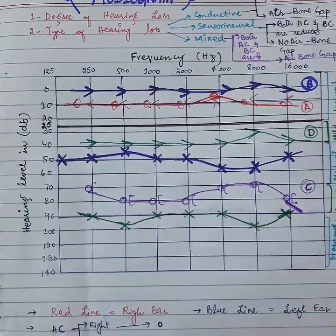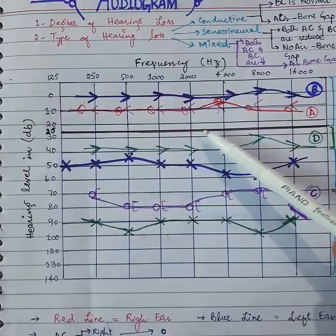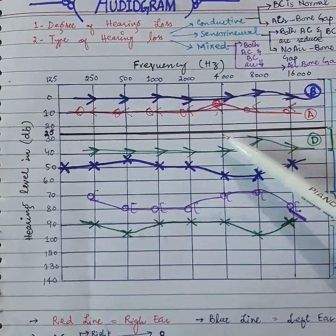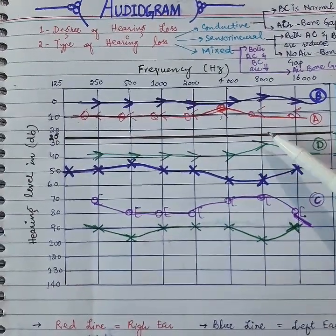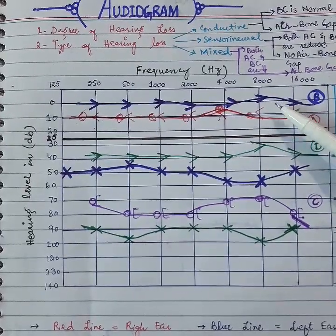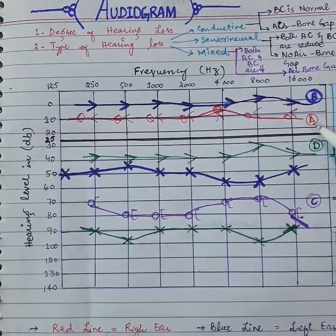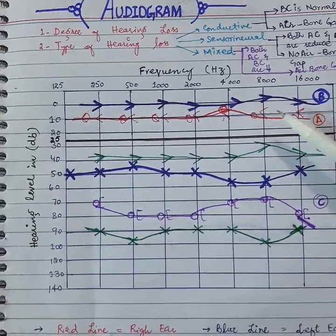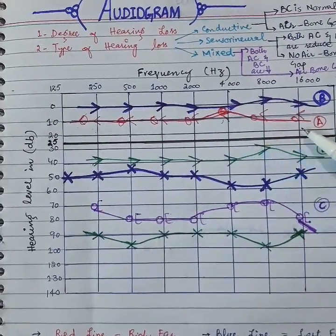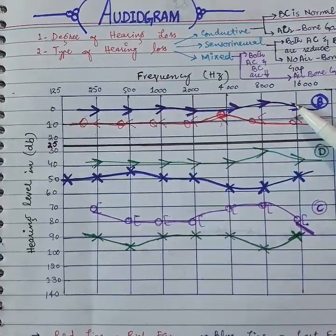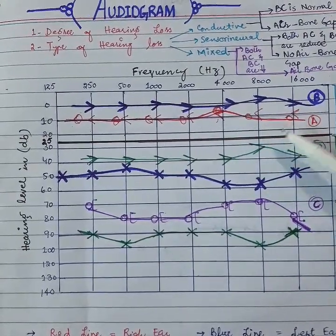Now we will look at these graphs one by one. First of all, graph A. You have to mark the line of 25 decibels. The upper range will be normal and the lower range will be abnormal. First, you will see bone conduction, which is above the 25 decibel range — it is normal. Then look at the air conduction, which is also above the 25 decibel range. Both are in the normal range, so it is a normal graph indicating normal hearing.